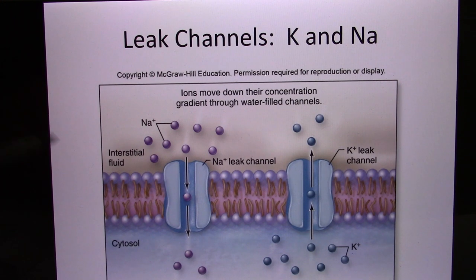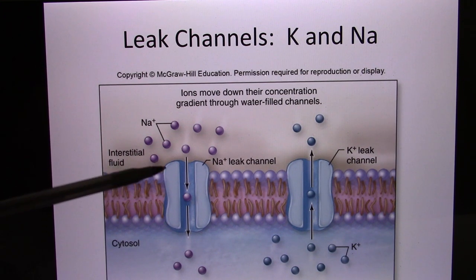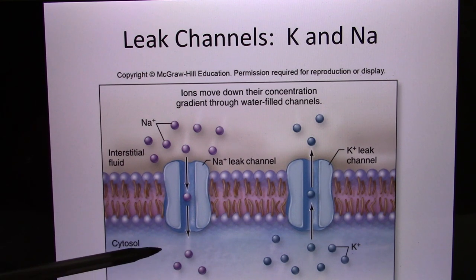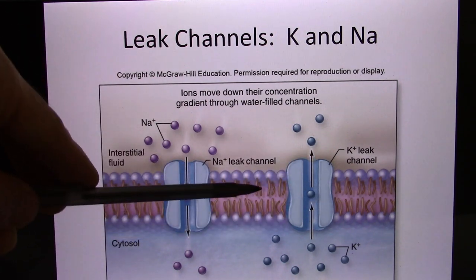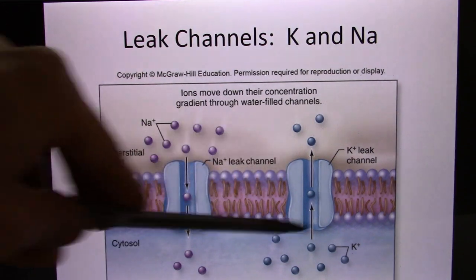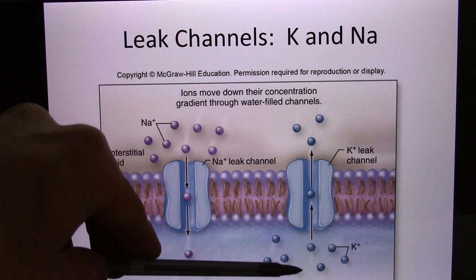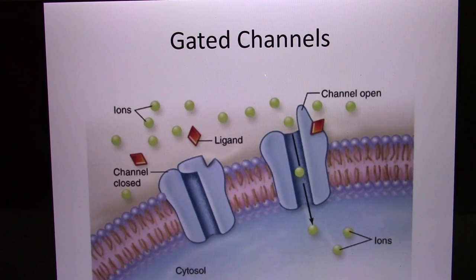Let's look at the ion channel. Ion channels are for ions — charged particles — to move. Sometimes you have the leak channel, which stays open. So sodium, which is high outside and low inside, can go through the leak channel from high to low. Potassium, which is high inside and low outside, can go through the potassium leak channel from high inside to low outside.